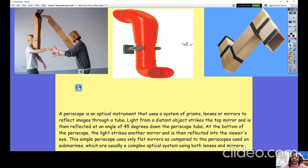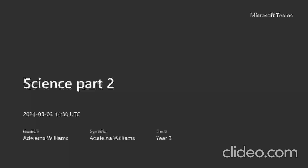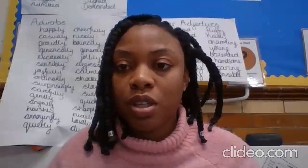The first mirror is at an angle of 45 degrees and reflects the light down the periscope to the mirror at the bottom. At the bottom of the periscope, the light strikes the second mirror and is then reflected into the viewer's eyes. A simple periscope only uses flat mirrors and allows you to see the image directly as it appears — a mirror image. Some periscopes, like those used on submarines, are complex optical systems using both lenses and mirrors and may magnify the image.